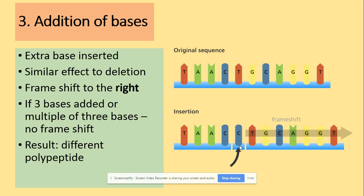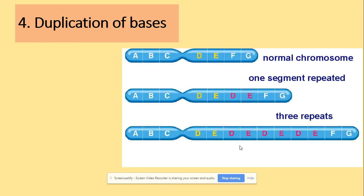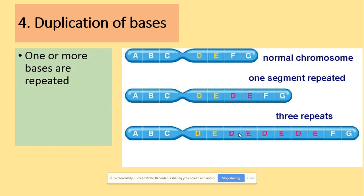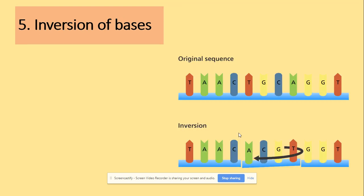As a result of addition, a different polypeptide is produced. Duplication of bases is where bases keep duplicating. The effect is a frameshift to the right, and as a result a different polypeptide is produced.